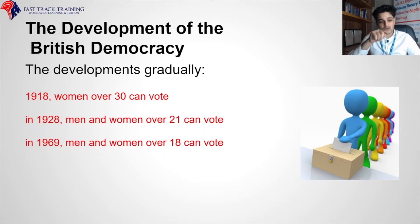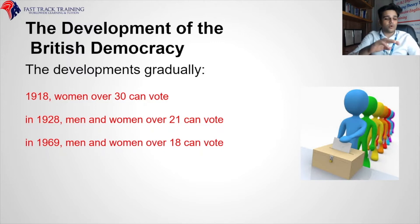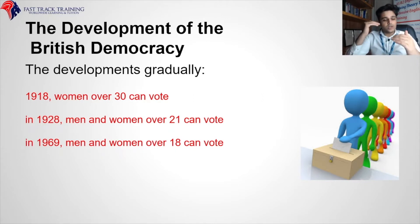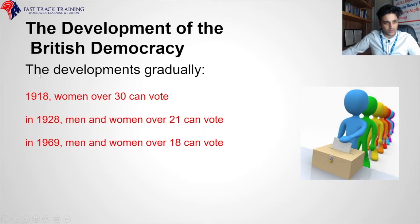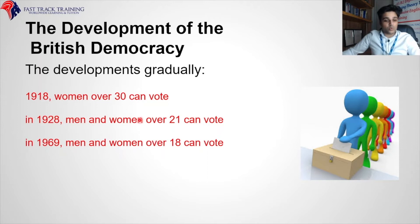There are three key stages in women gaining the vote. In 1918, women over 30 could vote — right after World War One. In 1928, men and women over 21 could vote — this is the most important date to remember. In 1969, men and women over 18 could vote, dropping the voting age to 18. So: 1918 women over 30, 1928 men and women over 21, 1969 men and women over 18.